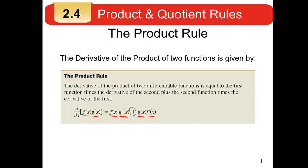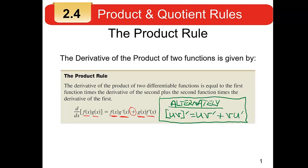If that way of writing it looks a little cluttered, I might suggest a slight alternative that maybe looks a little cleaner. Instead of using f(x) and g(x), I'll just say u and v, where u is like the f(x) and v is like the g(x). The derivative of the product is u times v prime, plus v times u prime. However you can best remember this formula is the way you should do it.